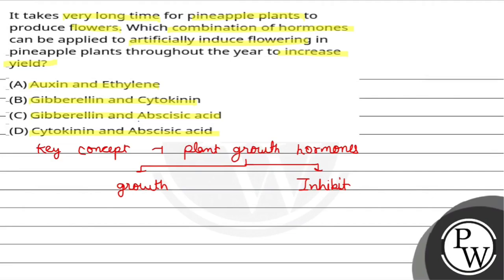The first hormone is auxin. Auxin is a root hormone — it promotes apical growth and never promotes lateral growth. Lateral growth is always inhibited in the apical part. Auxin plays a big role in root development and plant growth. This phenomenon is called apical dominance.